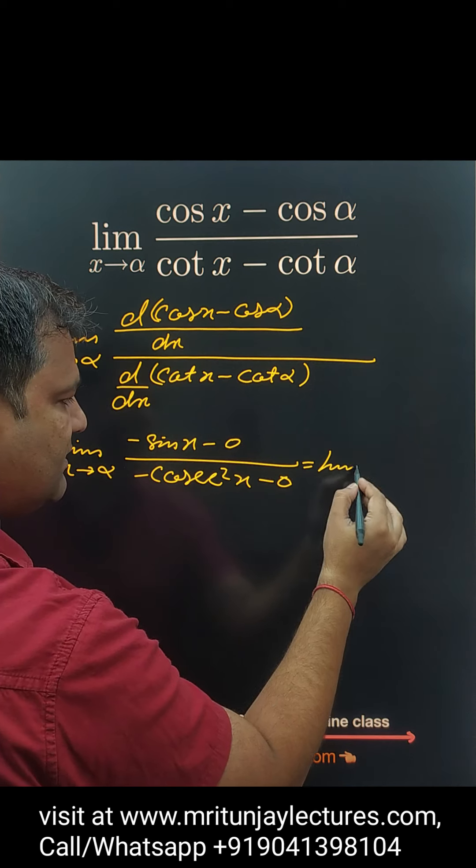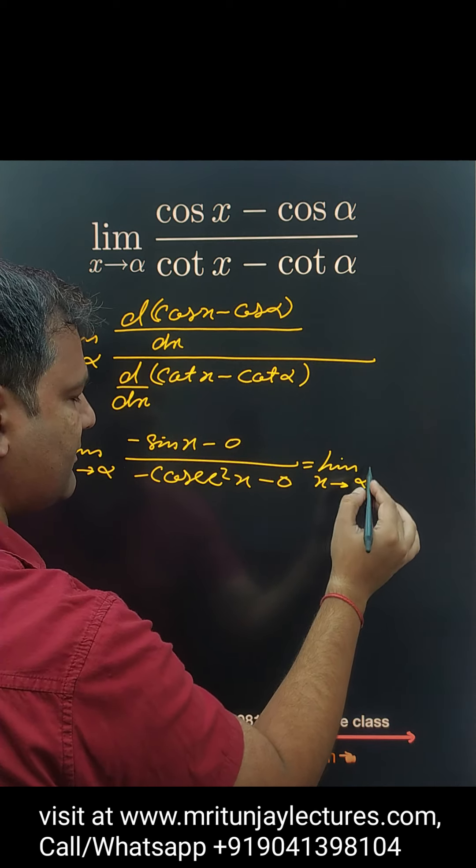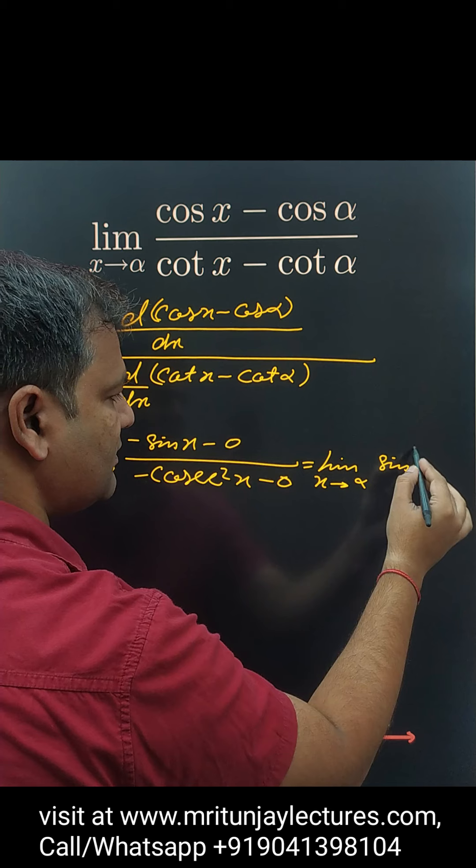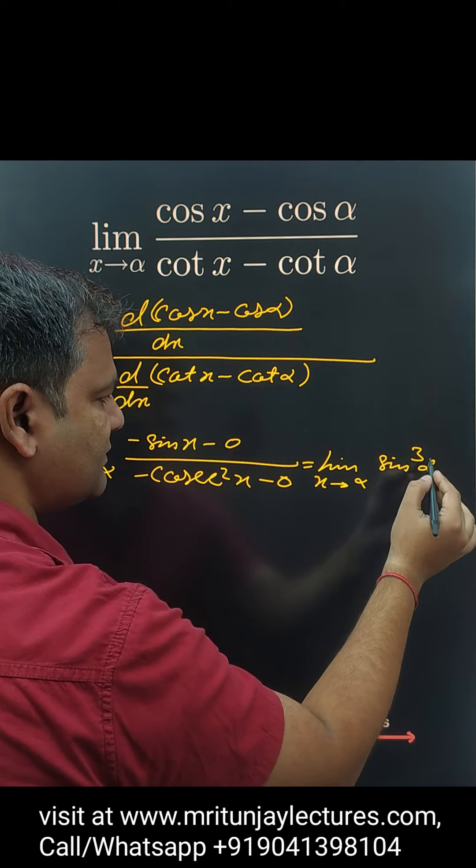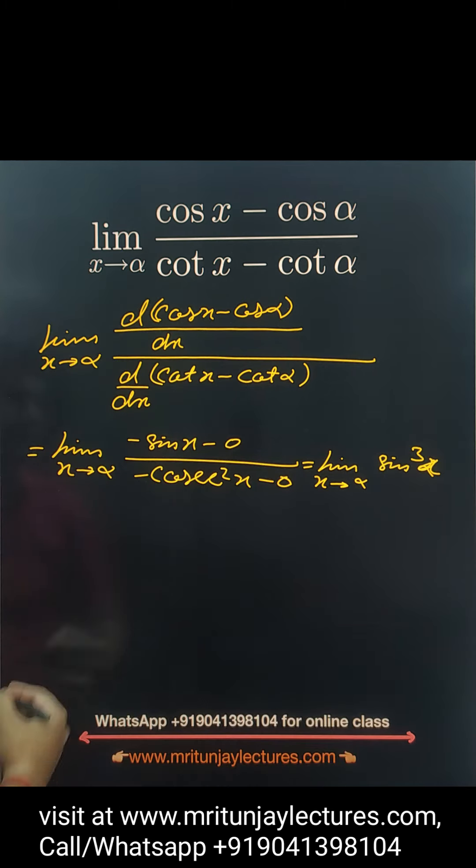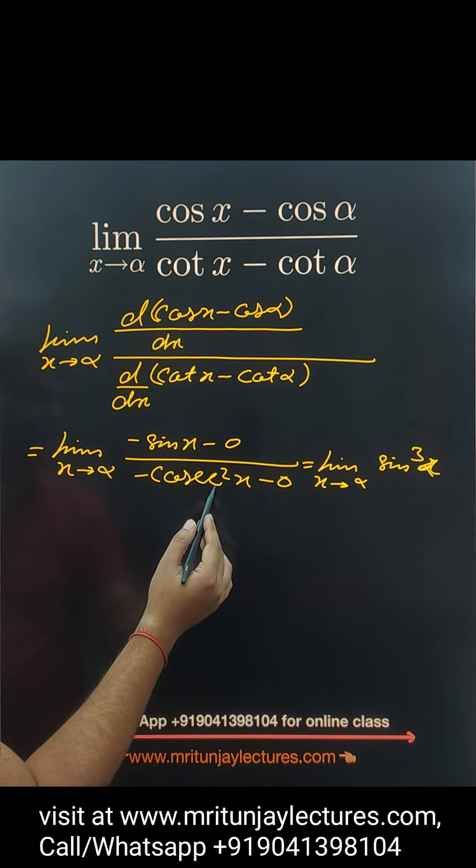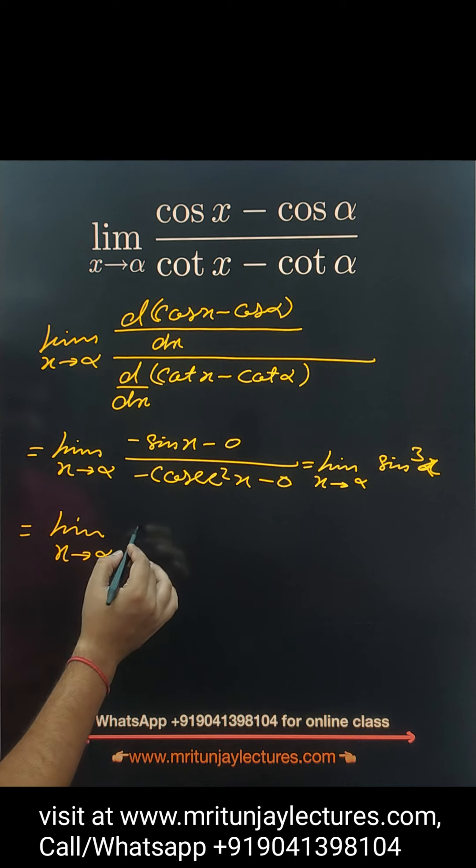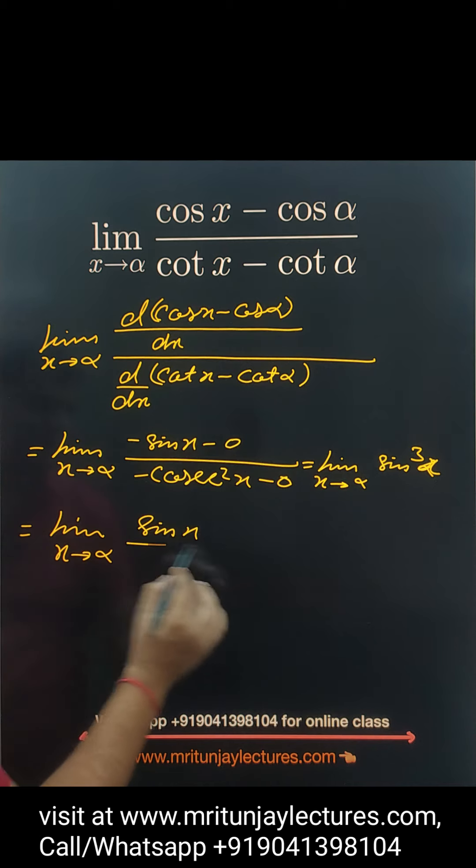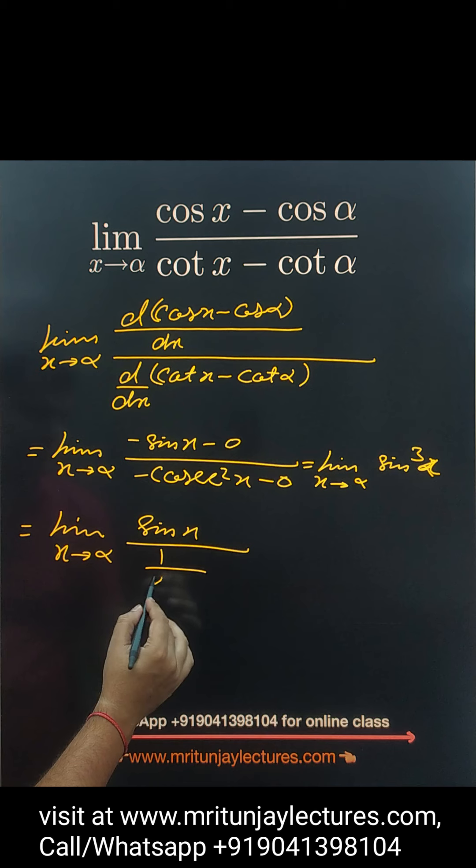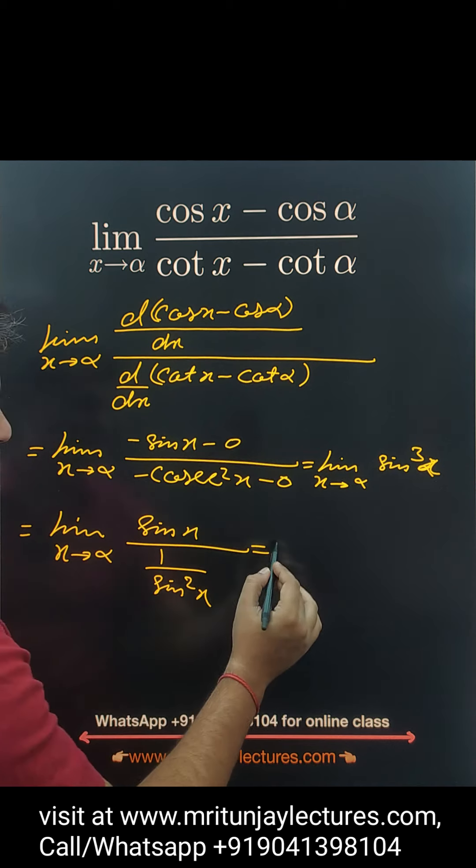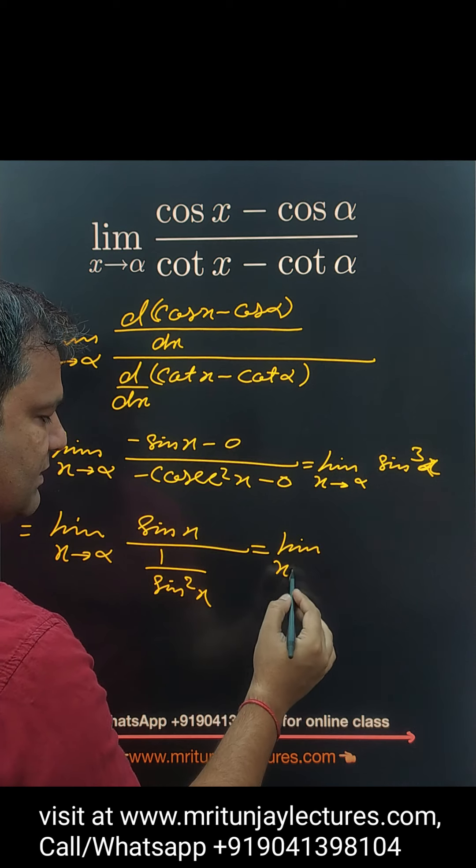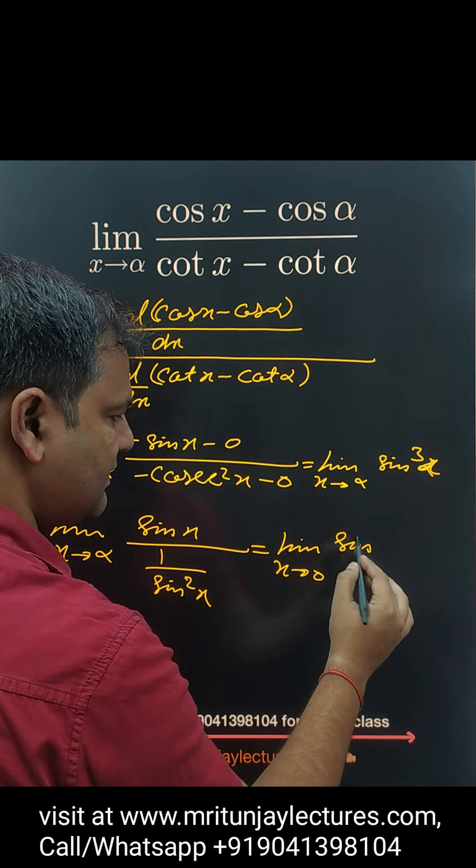So this can be written as limit x tends to alpha sine cubed x. Why? Because cot x is cos x over sine x. If x tends to alpha, and we have 1 upon sine squared x going to the numerator, then we get sine x to the whole cube.